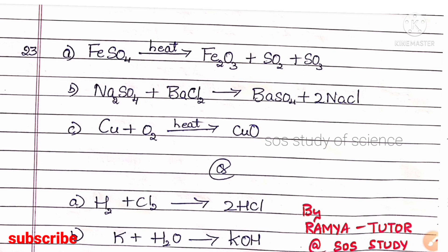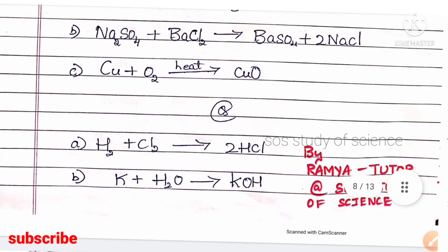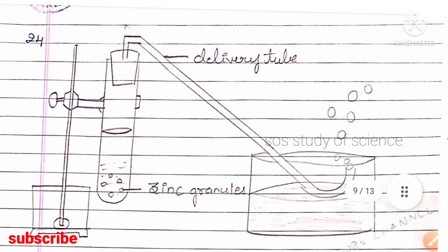Continuing question 23: copper combines with oxygen to form copper oxide — Cu + O₂ → CuO. Alternatively, hydrogen gas reacts with chlorine gas to form hydrogen chloride — H₂ + Cl₂ → HCl. Potassium combines with water to form potassium hydroxide — K + H₂O → KOH.